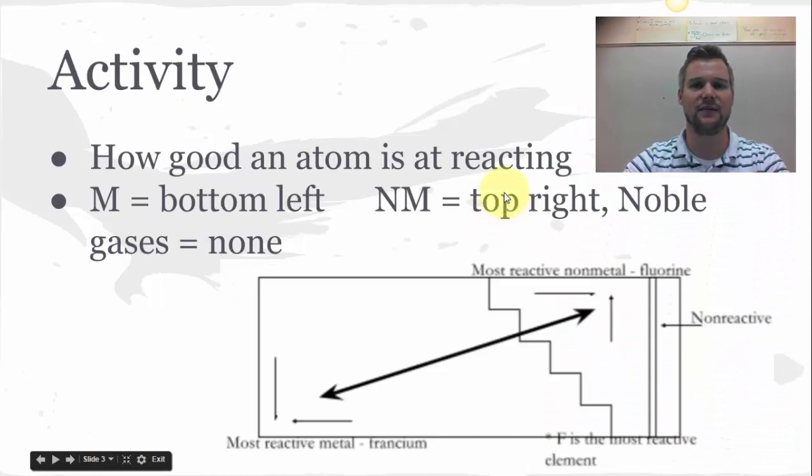Activity is the first one we're going to use, also known as reactivity, and that's a description of how good an atom is at reacting. For activity or reactivity we look at two different locations on the periodic table. We have a trend for the metals and a trend for the non-metals. For the metals we get more active towards the bottom left close to francium, and for non-metals we get more active towards the top right close to fluorine.